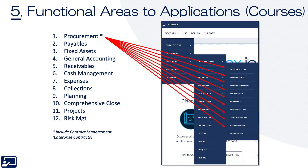The fifth topic: ERP pillar applications. This slide shows the applications within the procurement functional area. Functional areas and applications are dynamic — they will change over time, but it gives you an idea of how you go from pillar to functional area to application in the menus.